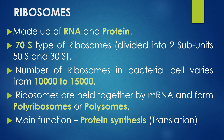Ribosomes are made up of RNA and protein. In prokaryotes, 70S type ribosomes are present, divided into two subunits: the 50S large subunit and the 30S smaller subunit. On average, 10,000 to 15,000 ribosomes are present in each bacterial cell. Ribosomes are held together by mRNA to form a chain-like structure called polysomes or polyribosomes. The main function of ribosomes is protein synthesis, that is the translation process — synthesis of protein from single-stranded mRNA.